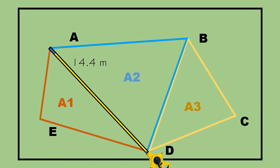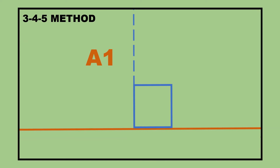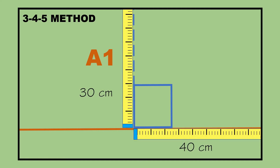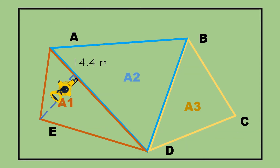Step 4: Measure the length of the altitude of the first triangle. To solve it, use the 3-4-5 method, where multiples of 3, 4, and 5 are used as measurements of the sides of a right triangle. First, measure 30 centimeters on the altitude and 40 centimeters on the base. Next, measure the distance between the 30 cm and 40 cm marks — it should be 50 centimeters. If not, adjust the position of the altitude until reaching 50 centimeters. After that, you have your right triangle. Make sure the altitude side coincides with the opposite vertex. The altitude of triangle A1 is 5.65 meters.